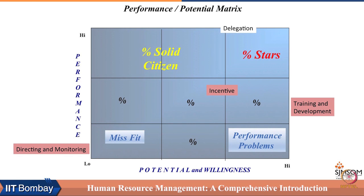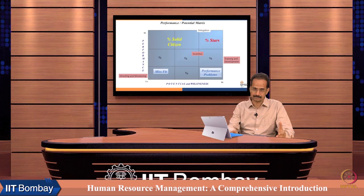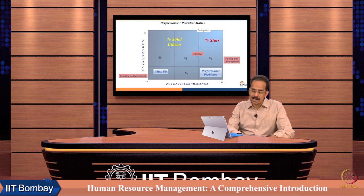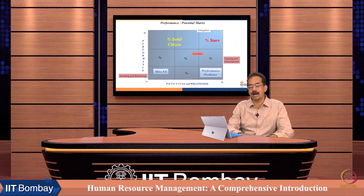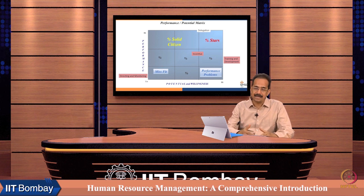The third category of talent can be called stars. These are stars because they contribute immensely to productivity and innovation in an organization. They are very high on performance and also very high on potential and willingness. These are also the most vulnerable talent — the performers that competitors are generally always looking out for. The talent in this category is most vulnerable to poaching by competitors.